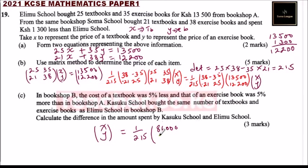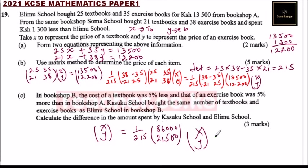For the second row: minus 21 times 13,500 plus 25 times 12,200, which gives 21,500. Simplifying: dividing 86,000 by 215 gives 400, and dividing 21,500 by 215 gives 100.